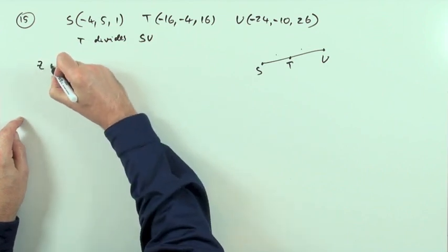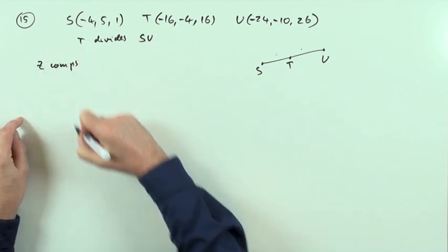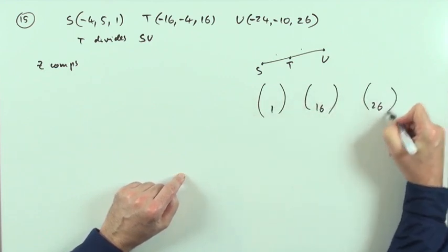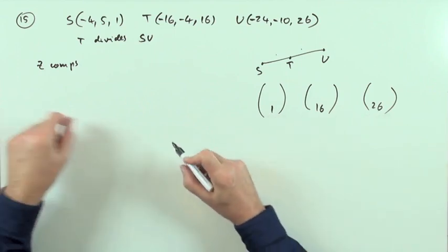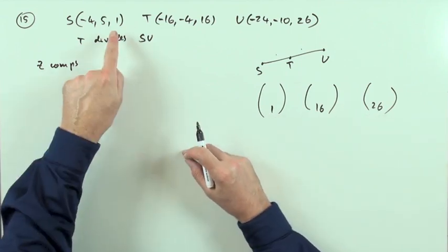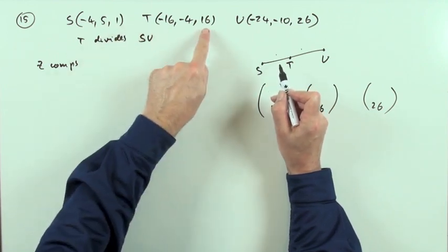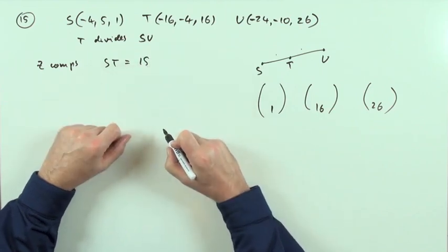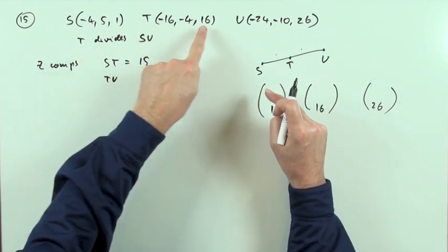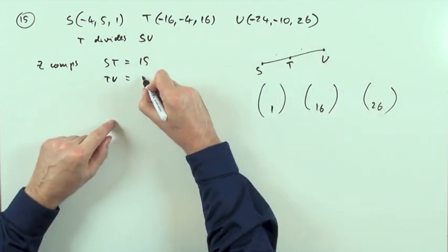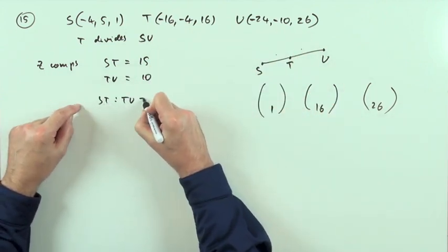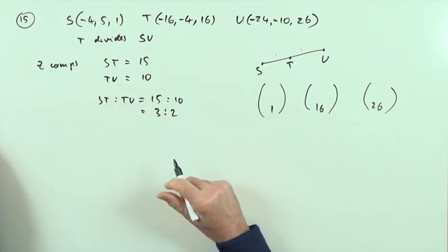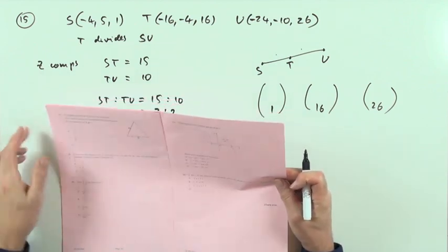You can just consider one component — the z-components are the nicest since they're all positive: 1, 16, and 26. Going from S to T: 1 to 16 is a change of 15. Going from T to U: 16 to 26 is a change of 10. So ST to TU is 15 to 10, and dividing both by 5 gives 3 to 2 — answer B.